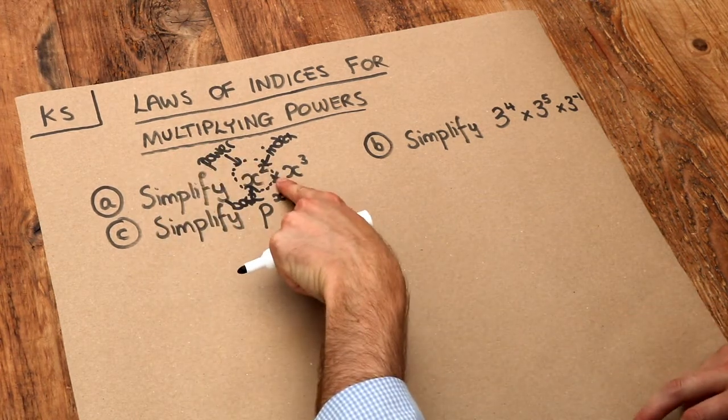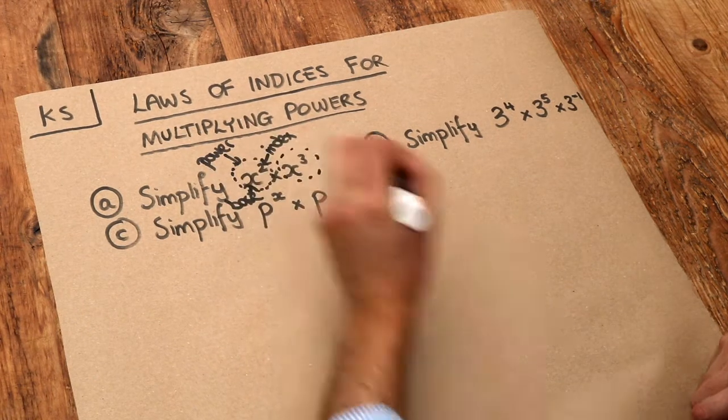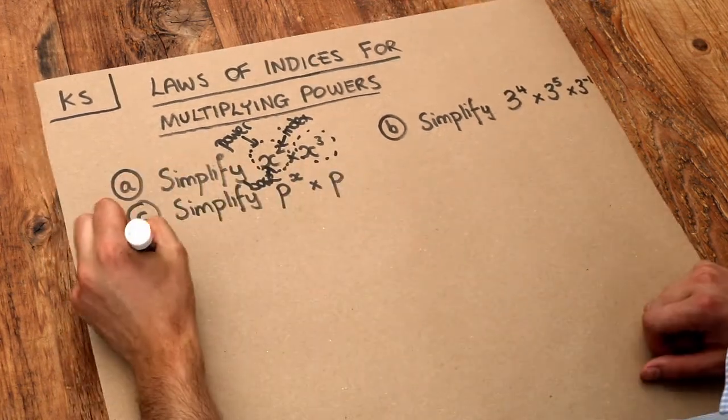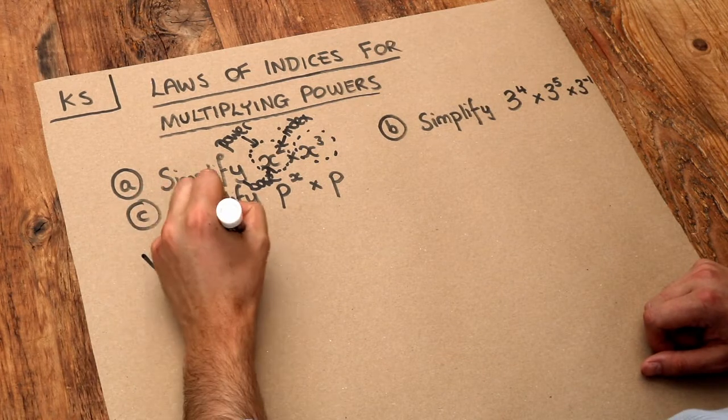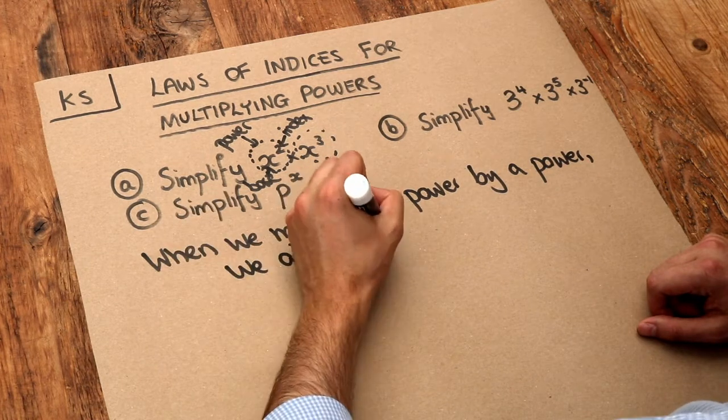Now when we multiply two powers like this, we've got a power times a power. There's a rule for this: when we multiply a power by a power, we add the indices.